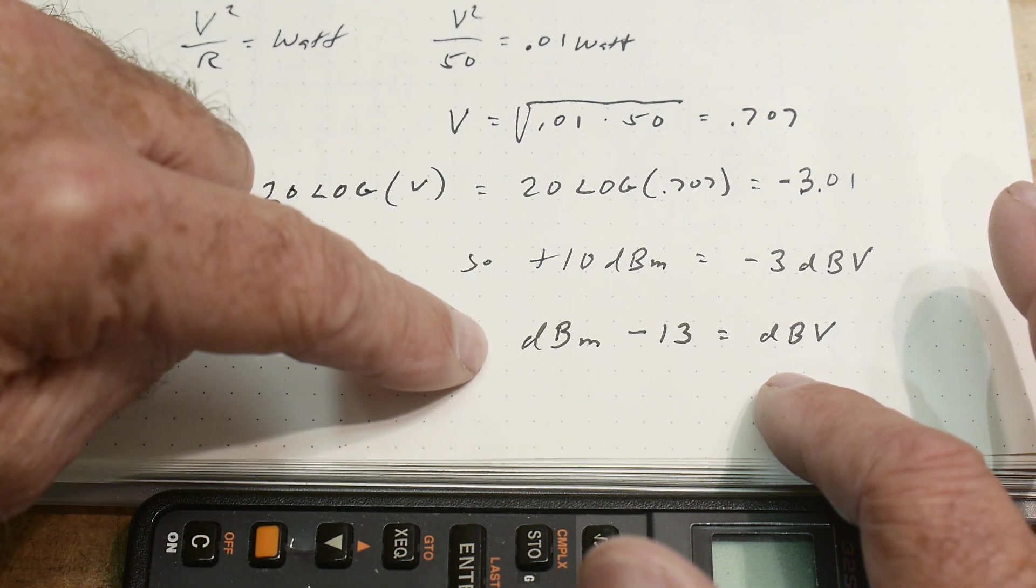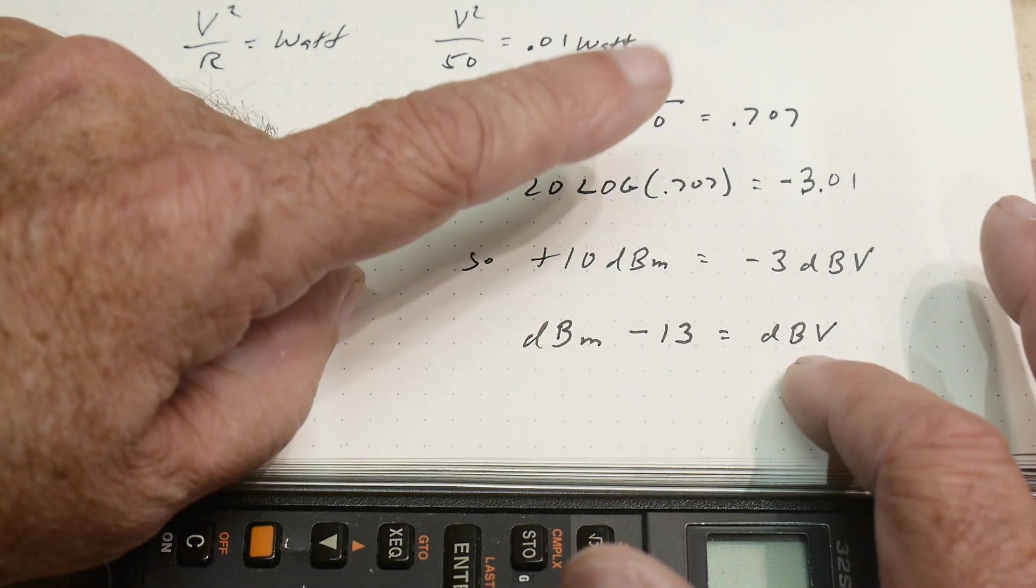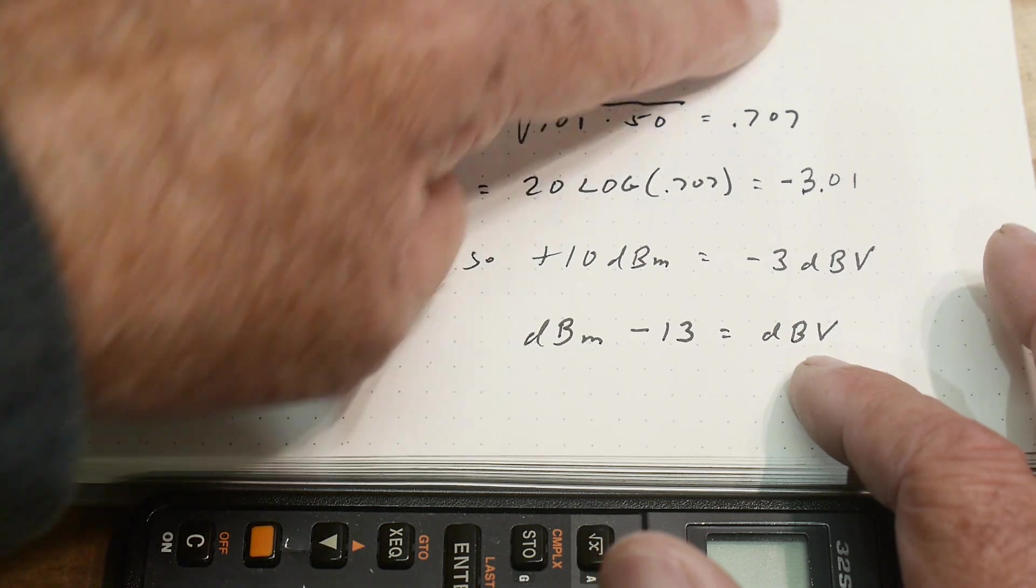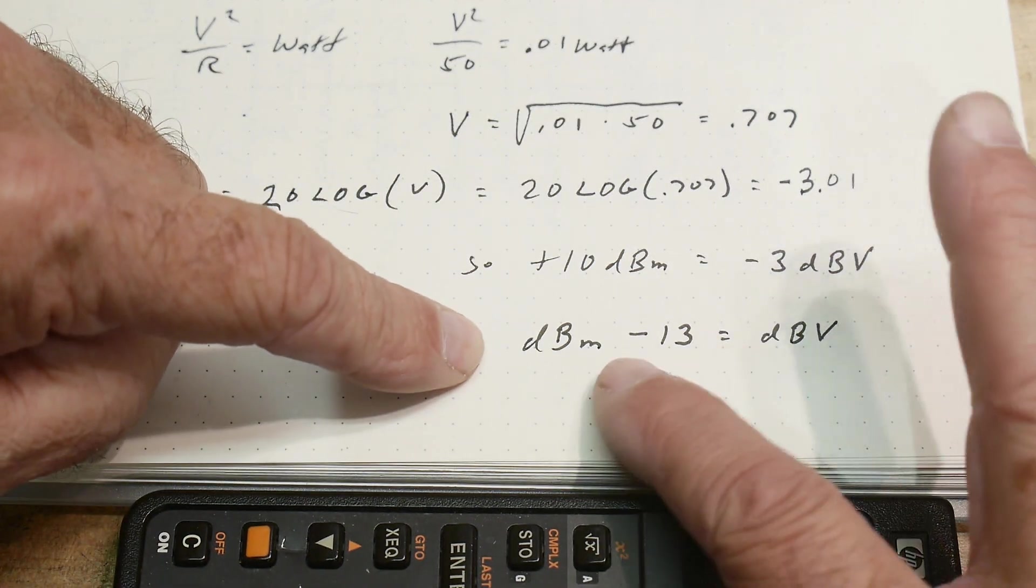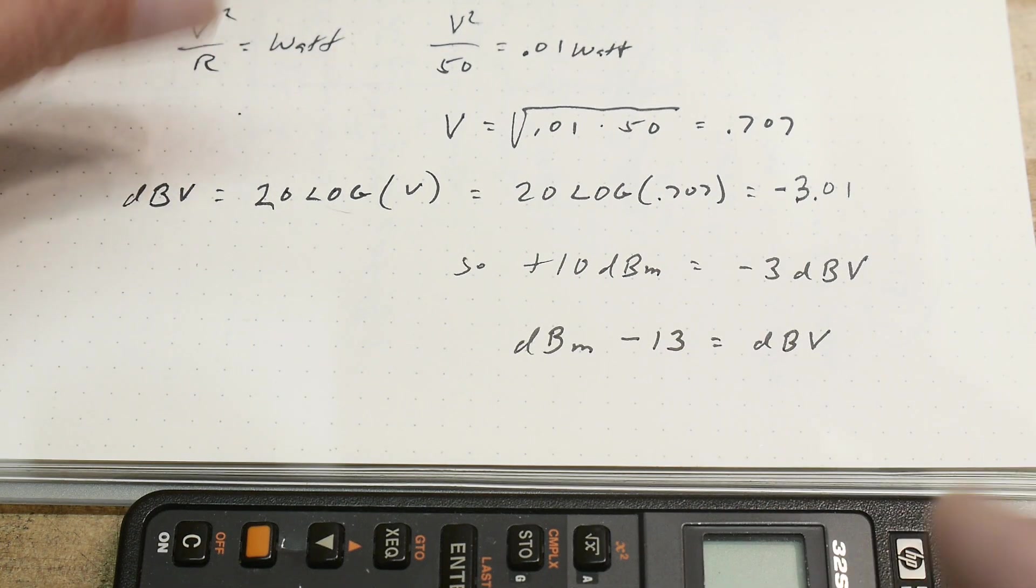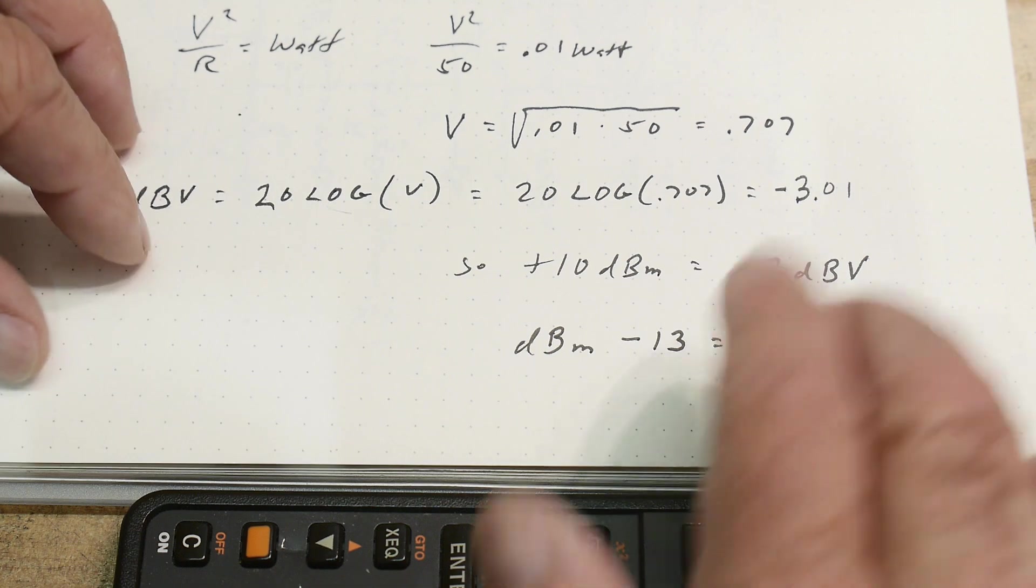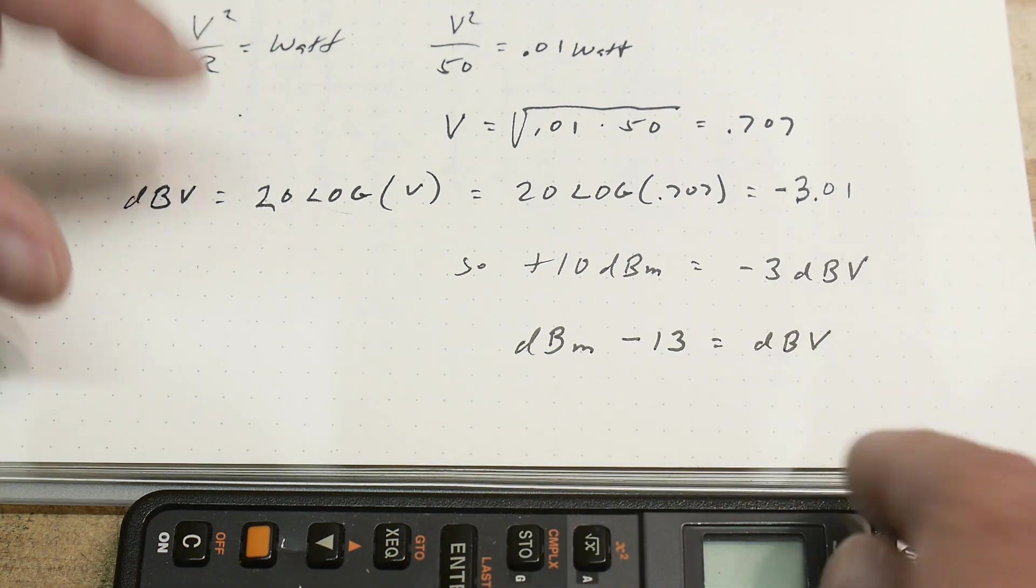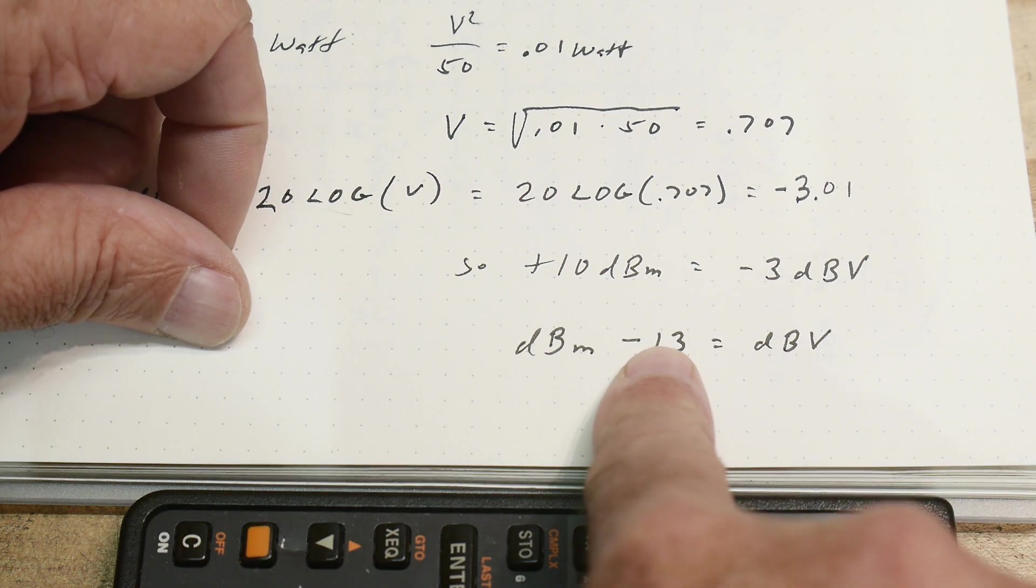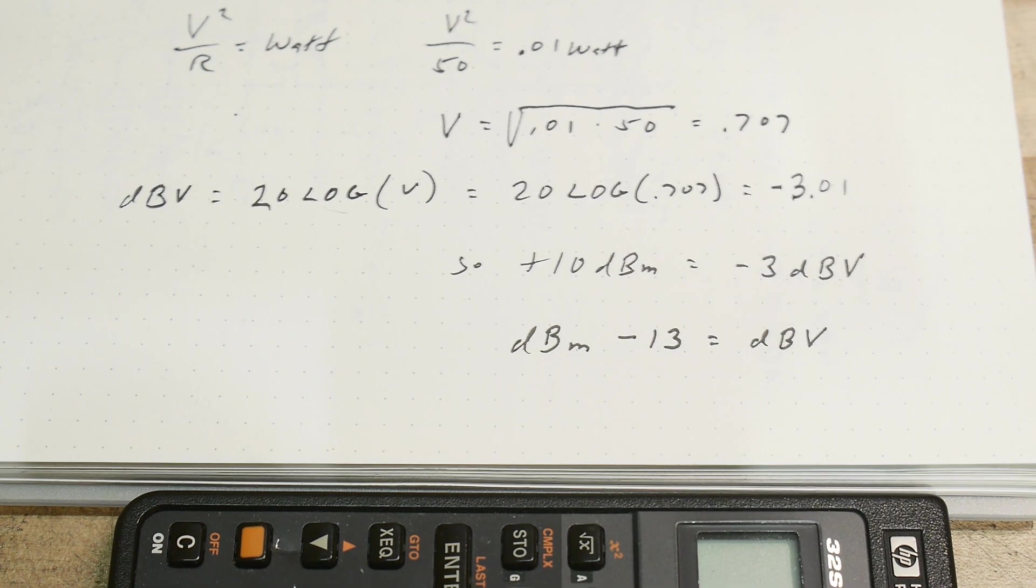Like if you had 0 dBm you would have minus 13 dB volts. Or if you had plus 10 dBm you'd have minus 3 dB volts. Now this spectrum analyzer does not display in dBm but it does display in dB volts. So all we have to do is take our dB volts and add 13 to get dBm's. So that's how we're going to do it.